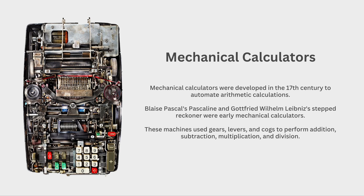Next we have mechanical calculators. Mechanical calculators were developed in the 17th century to automate arithmetic calculations — addition, subtraction, and multiplication. Notable inventors include Blaise Pascal, who developed the Pascaline, and Gottfried Wilhelm Leibniz. These were devices that could perform more complicated calculations. Unlike a modern calculator, you would see no electronic device or chip in a mechanical calculator.